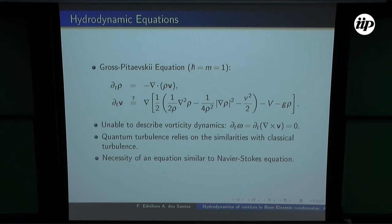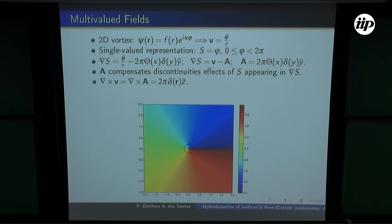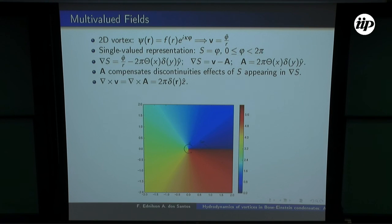Quantum turbulence relies on the similarity between this equation and the Navier-Stokes equation, but this equation doesn't describe vorticity, so there is a problem. The problem is that S is a multi-valued field, so when we try to calculate the velocity field, we usually use the chain rule of differentiation. The fact is that the chain rule cannot be used when we have multi-valued fields.